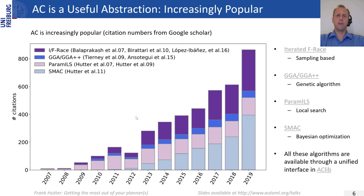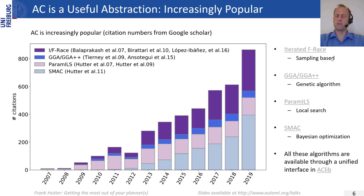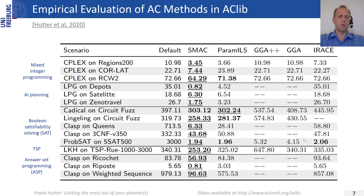Algorithm configuration is increasingly popular. The four most popular tools are: Iterated F-Race, based on estimation of distribution; GGA and GGA++, genetic algorithms; ParamLS, local search; and SMAC, based on Bayesian optimization. I recommend using these through the ACLib interface. My empirical evaluation shows SMAC is very competitive — for LPG, SMAC found much lower runtime than ParamLS, so if you've used ParamLS before, I'd encourage you to try SMAC.